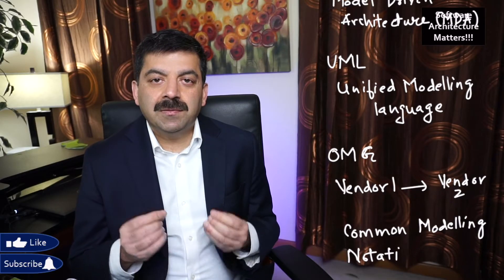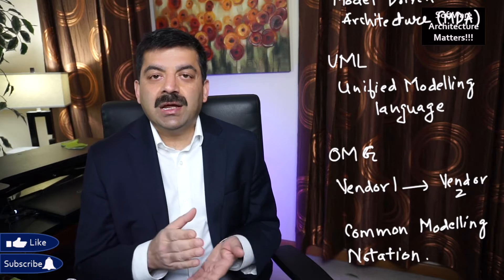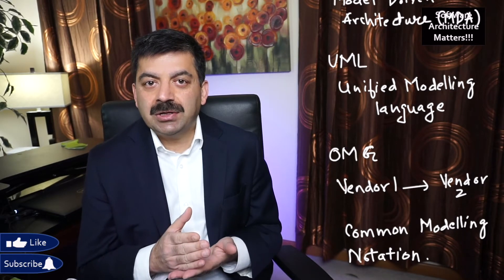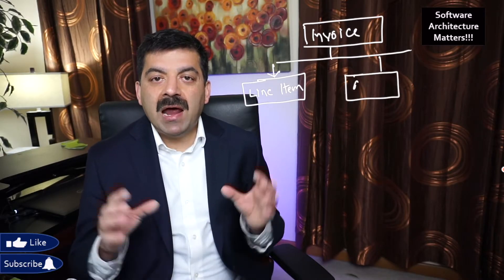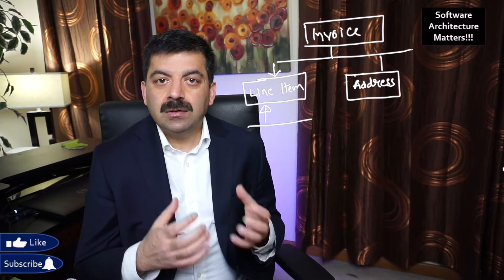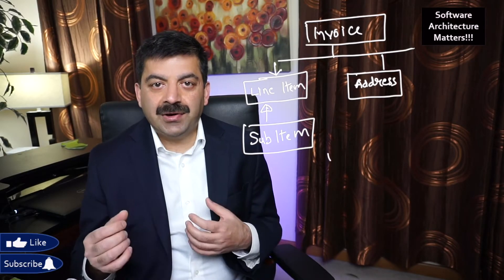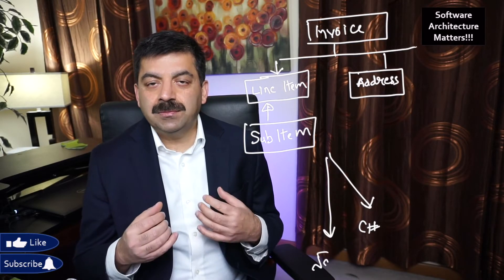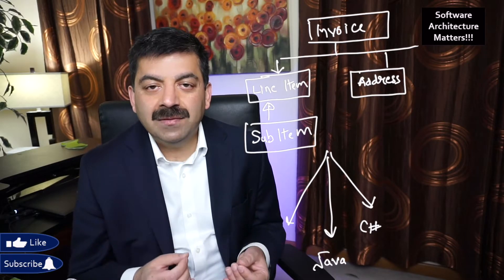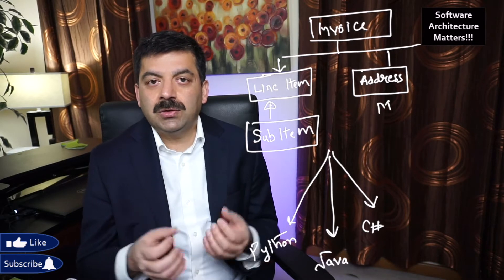Initially, model-driven architecture looked very promising. The idea was that you can design your hierarchy and interactions of objects using modeling tools. You can build a platform-independent model. So you define your model using tools. For example, an Invoice has line items and address, and line items have sub-items and it inherits sub-items. The idea was we can capture our domain model using these modeling tools.